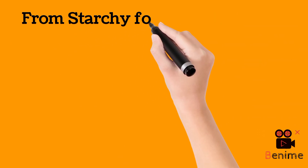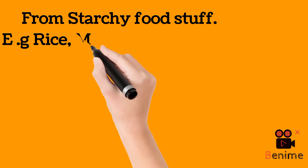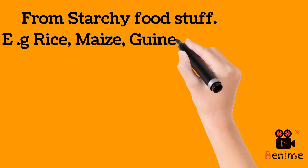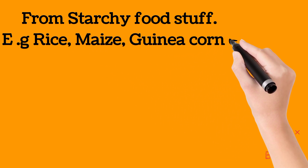Now, production of ethanol — let's look at it from starchy foodstuff. Starchy foodstuffs like potatoes and cereals, e.g. rice, maize, guinea corn, millet, and barley, are the main source of ethanol in many countries.